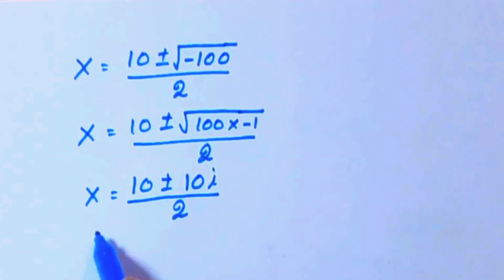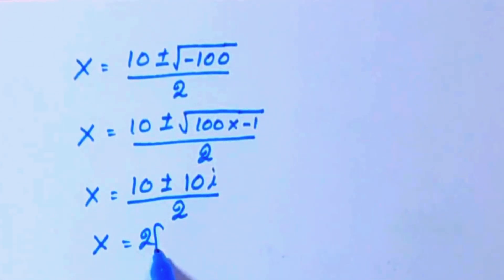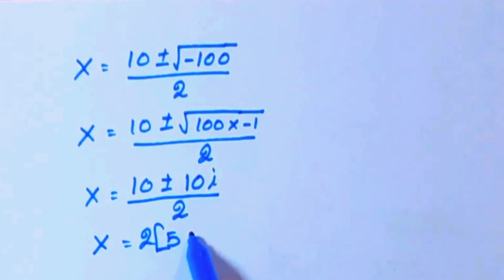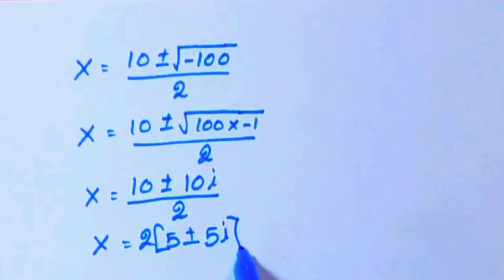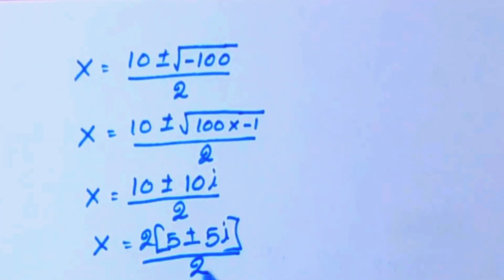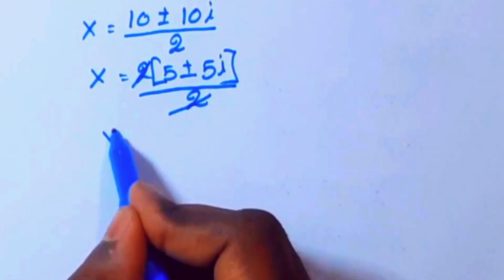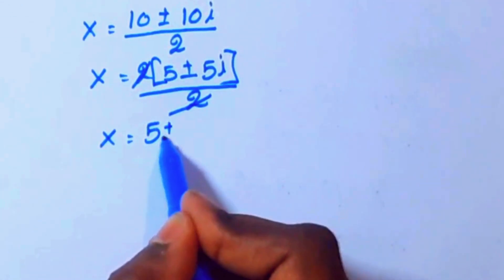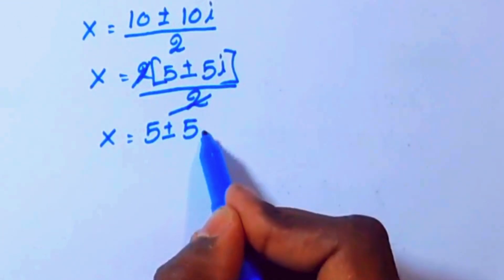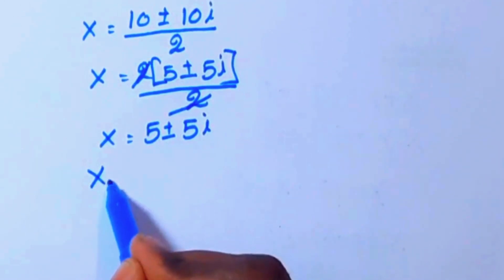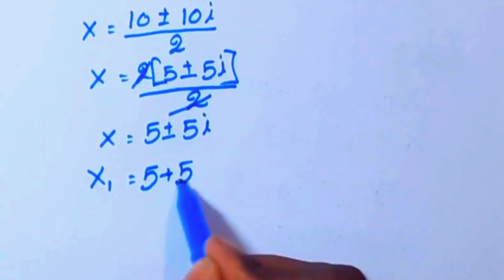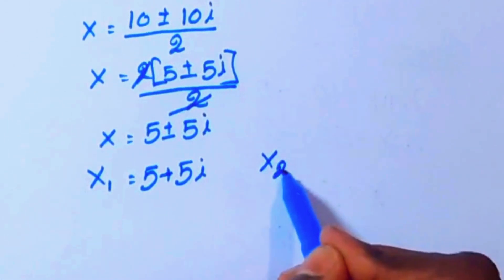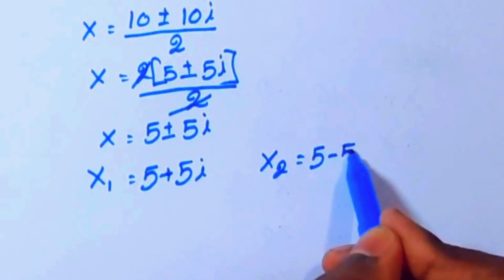We are going to take 2 as a common factor from the numerator. So we have 2 times (5 plus or minus 5i), divided by 2. The 2 cancels, giving us x equals 5 plus or minus 5i. Therefore x1 equals 5 plus 5i, and x2 equals 5 minus 5i.